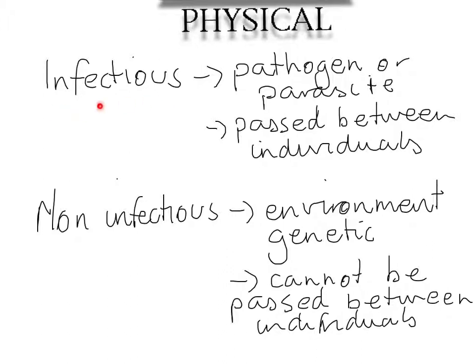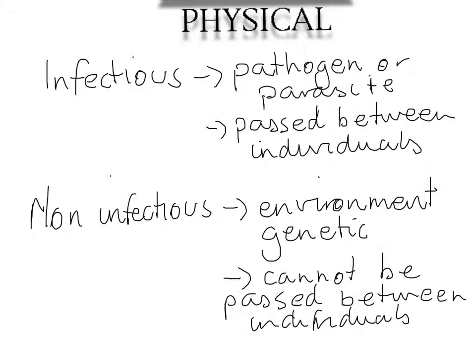Examples of infectious disease include all sorts of viral infections — colds, flus — and diseases we'll look at in more detail later, like tuberculosis, HIV, and malaria. Non-infectious diseases include environmental diseases such as deficiencies and malnutrition. Coronary heart disease (CHD) is an example of a non-infectious disease caused by environment or diet, or it could be a genetic disorder — some people are genetically predisposed to heart disease. Cystic fibrosis or Huntington's disease are examples of genetic disorders, which are non-infectious and cannot be passed between individuals.